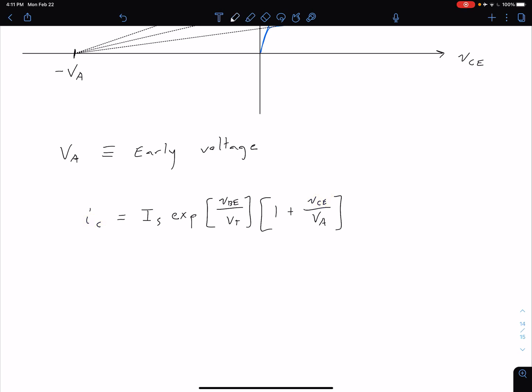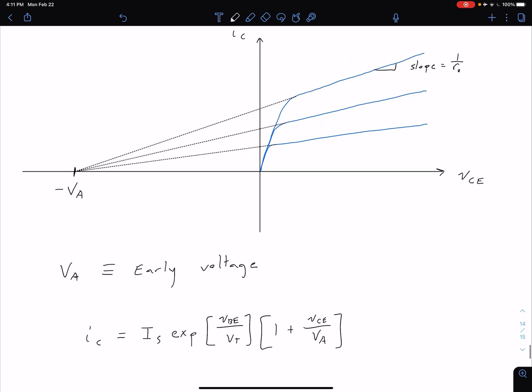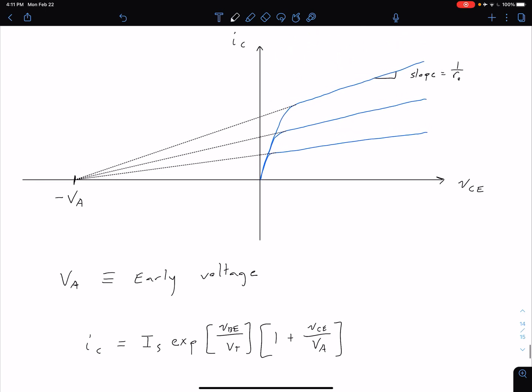And so if we want to find an expression for the slope of this curve, what we can do is we can say that's just the partial derivative of our current with respect to that voltage VCE.